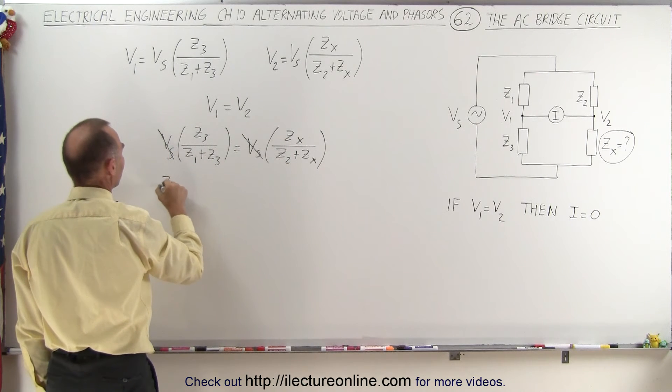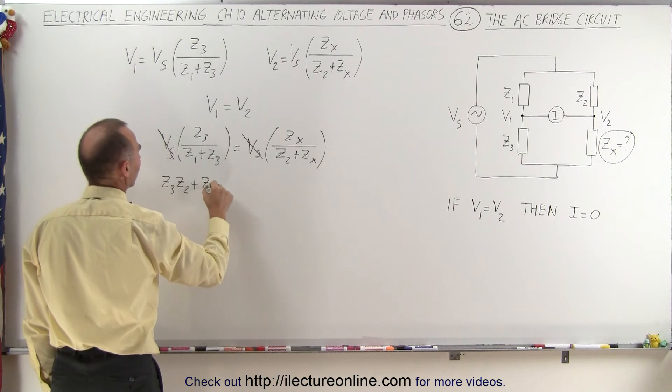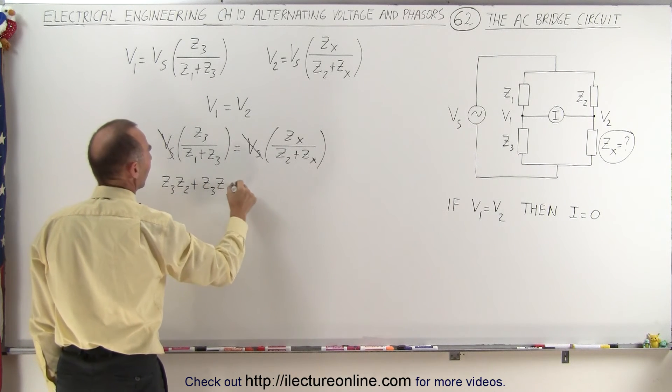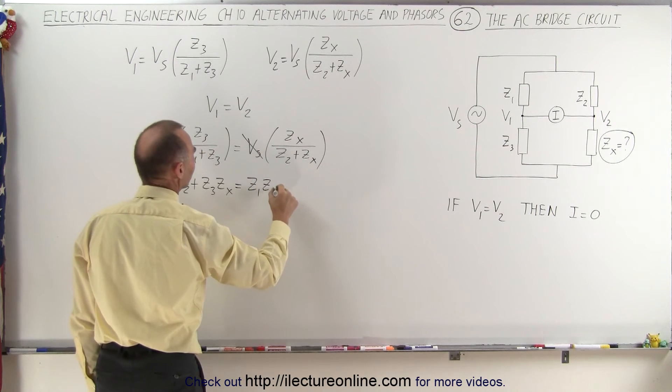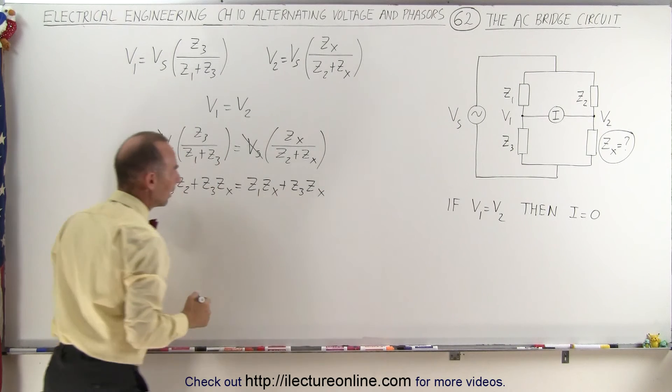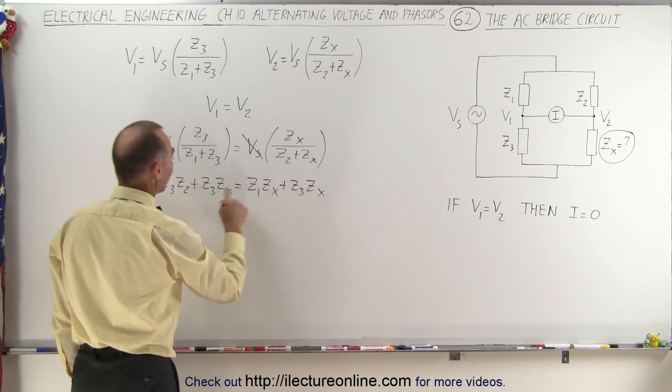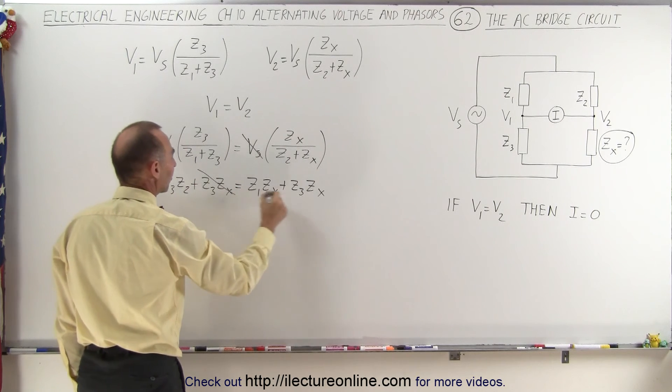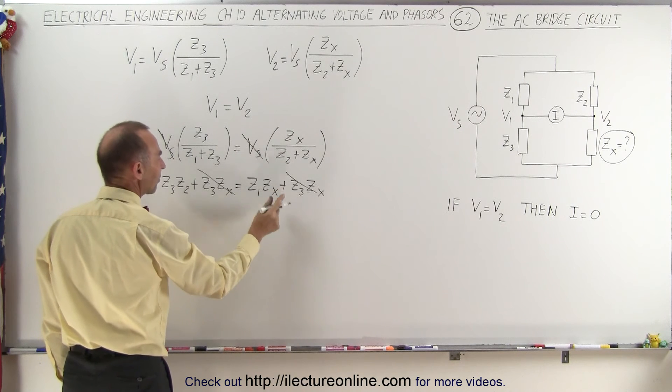On the left side we get Z3 times Z2 plus Z3 times Zx. On the right side we get Z1 times Zx plus Z3 times Zx. Notice on both sides we have Z3 times Zx, so that cancels out, leaving us with Z3 times Z2 equals Z1 times Zx.